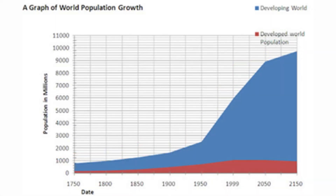As shown in this next chart, the population growth has been primarily in developing countries. In recent decades, the fertility rate in developed countries has fallen, while the fertility rate in developing countries has remained high.